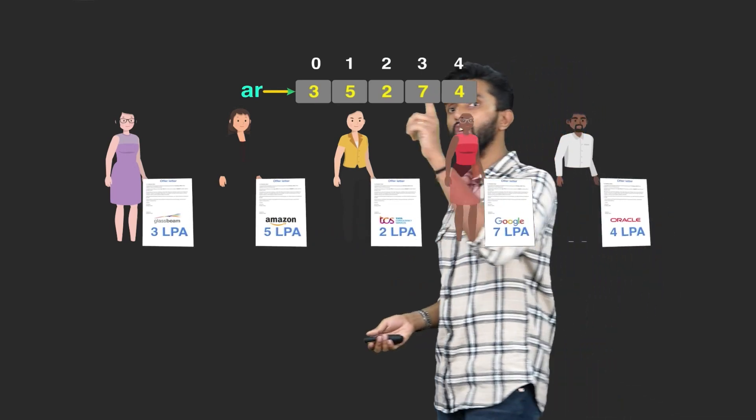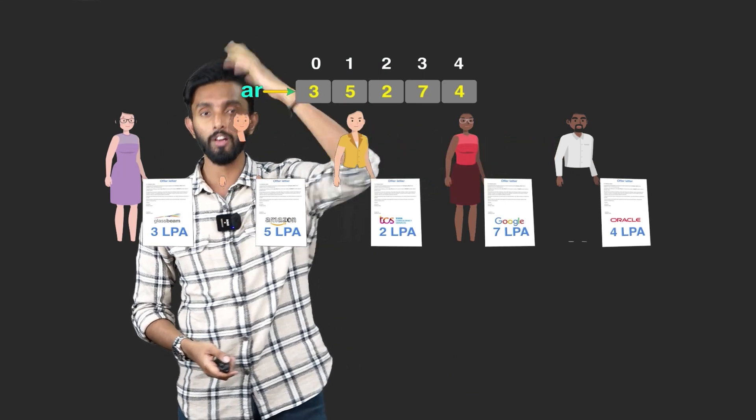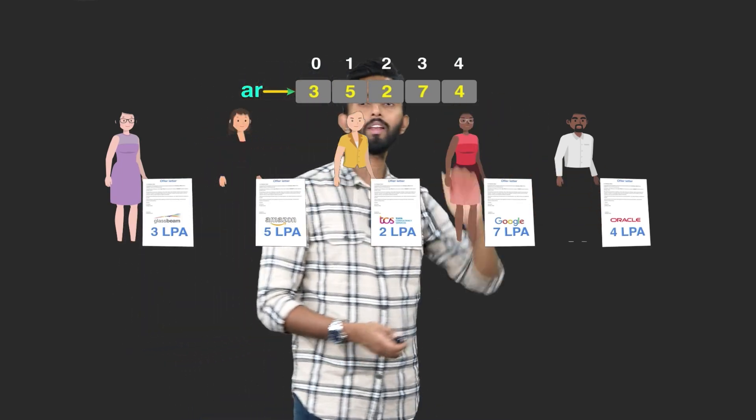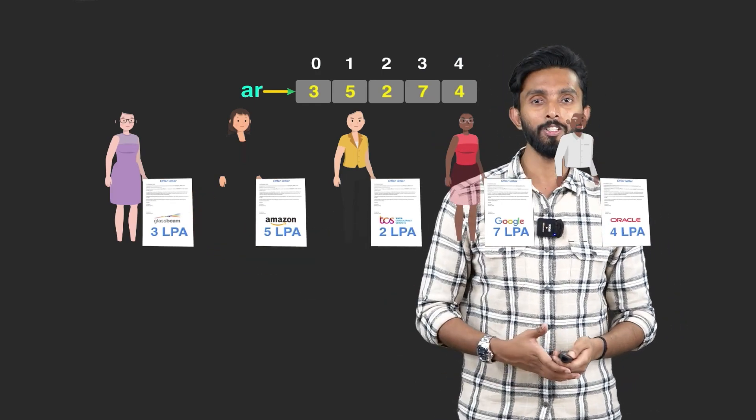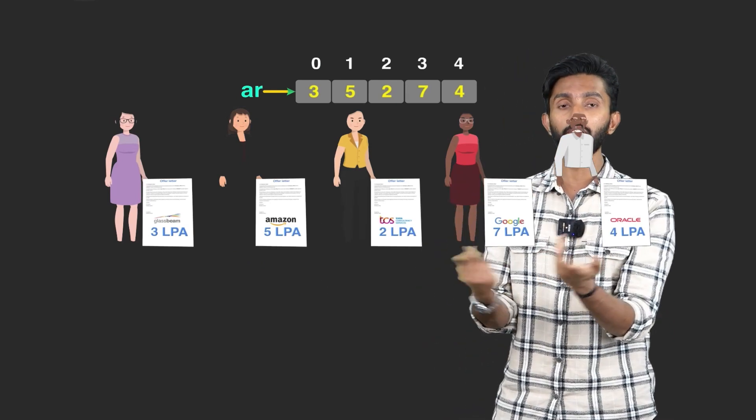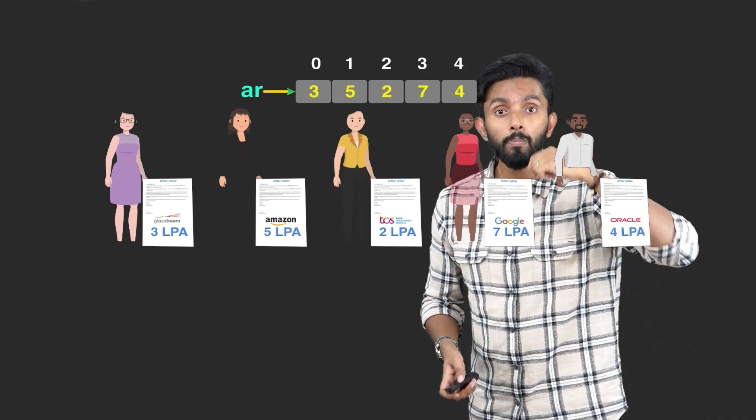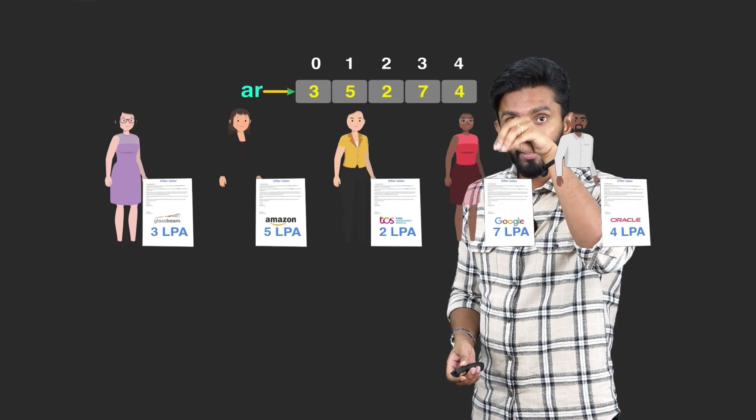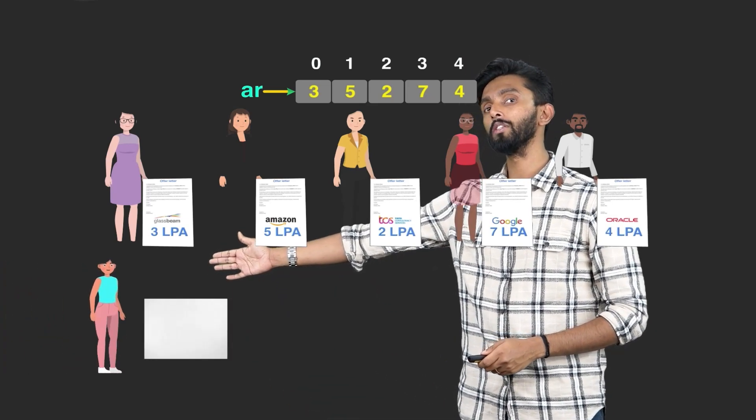Imagine each of these numbers is like the package of different students who have got placed in different companies. One person got 3 LPA, one person got 5 LPA, 2 LPA, 7 LPA, 4 LPA, like that. Now your job is to find which amongst these people got the highest package. But now, we as human beings will take one second to look with our eyes and say that, sir, highest package is 7.